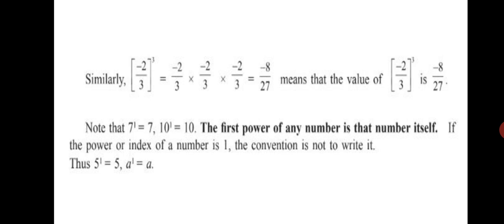Let's look at another example: minus 2 upon 3, raised to the power of 3. This equals minus 2 upon 3, multiplied by itself 3 times. In the numerator: minus 2 into minus 2 into minus 2 gives minus 8 (since plus into minus is minus). In the denominator: 3 threes are 9, and 9 threes are 27. So the value of (−2/3)³ is −8/27.